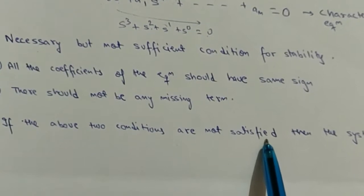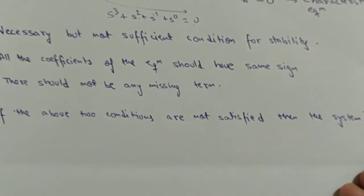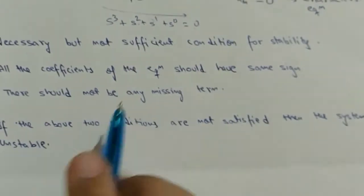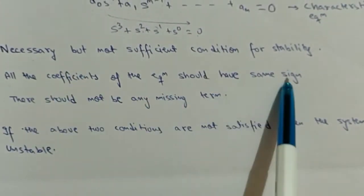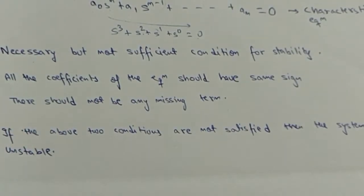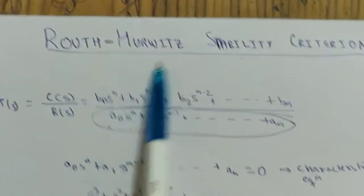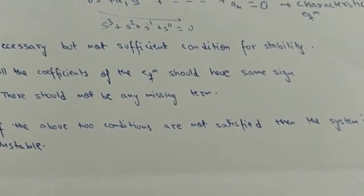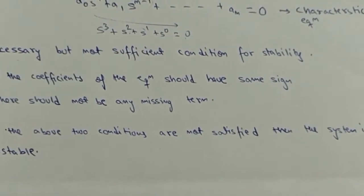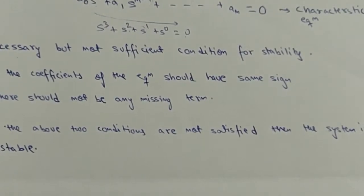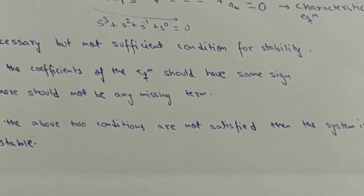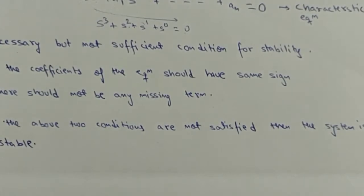If the above two conditions are not satisfied, then the system is unstable. But if all the coefficients have the same sign and no missing term, we have no guarantee the system is stable. Then we use the Routh-Hurwitz stability criterion, which states: for a closed-loop system to be stable, it is necessary and sufficient that all elements of the first column of the Routh array must have the same sign, provided no row results in all-zero elements.